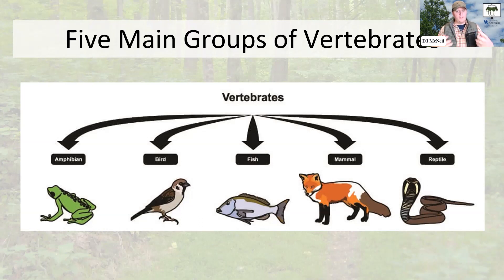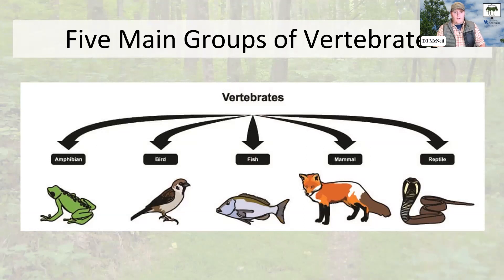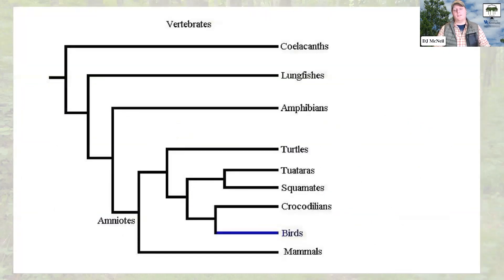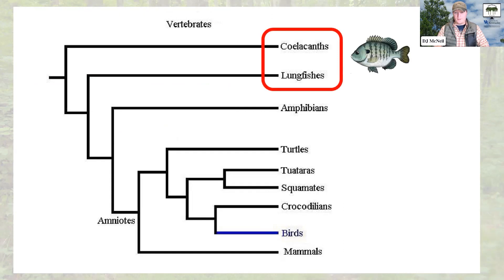With those five main groups in mind, we can think of where those groups of vertebrates originated. Vertebrates, of course, are only animals with spines — they're not going to include things like crabs, octopus, or insects. We've got these five main groups of vertebrate animals, and we can plot them out on what's called a cladogram or a phylogenetic tree to see the relationships among these organisms. Fish form a single monophyletic group.